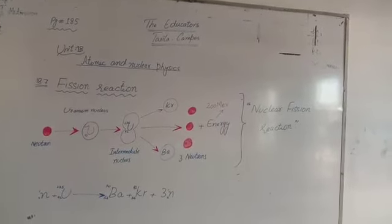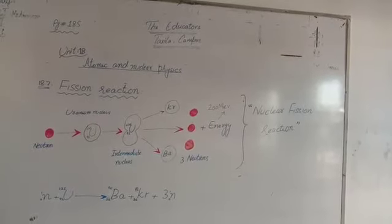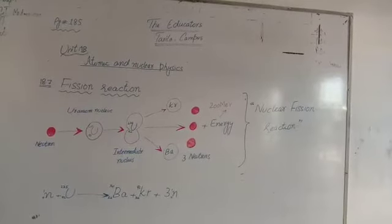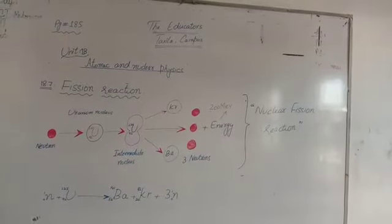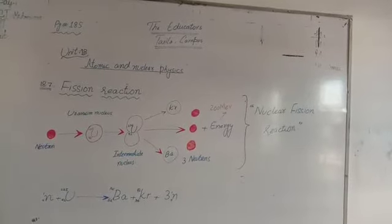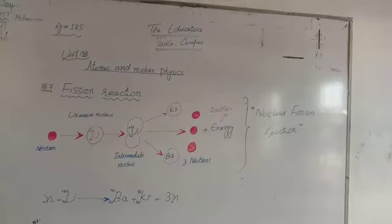Having a fission in that nucleus, it splits into two smaller nuclei. The diagram, as you can see over here, shows that uranium is a heavy nucleus having atomic mass 235 and atomic number 92.